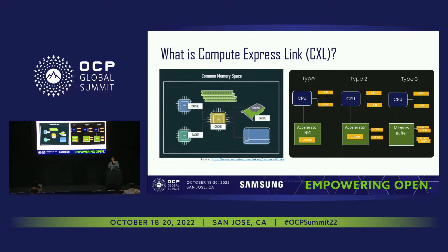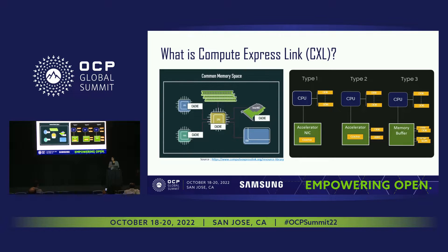There are typically three types of devices: Type 1, 2, and 3. Type 1 is a compute device, which has a cache to access memory exposed by other devices. Type 2 does that but also has its own memory exposed to the external system and other compute devices. Type 3 is typically a memory buffer that does not have its own cache for compute, but has memory devices that it exposes to other components in the system.